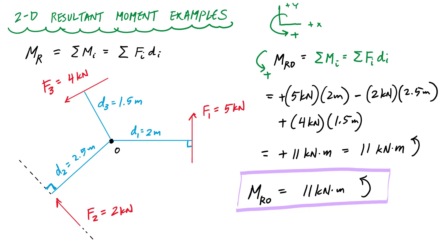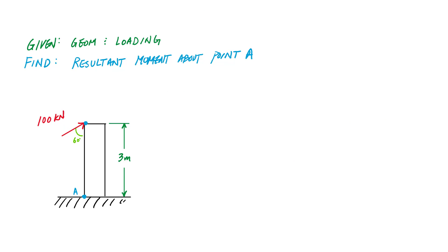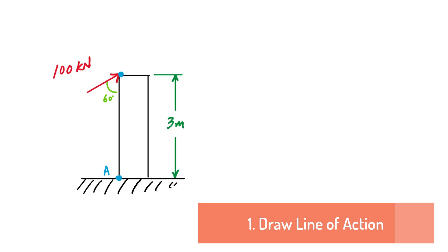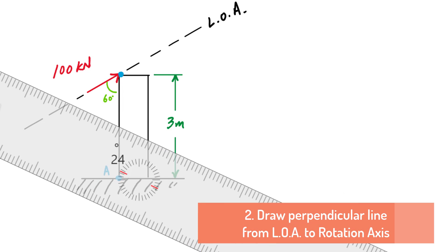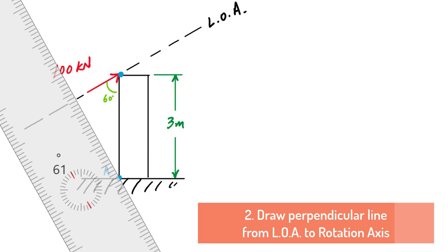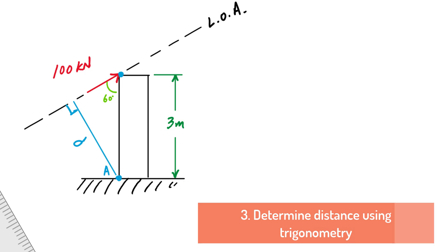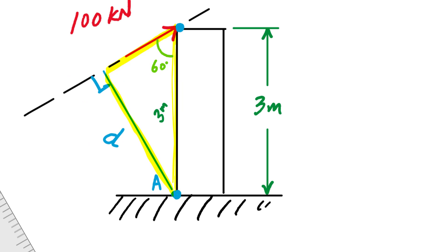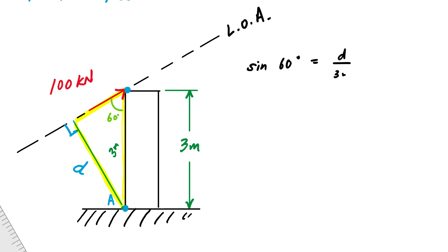Usually in 2D problems, you have a force but are not given the perpendicular distance directly. Here I have a tower with a 100 kN force applied at 60 degrees from the vertical, and I want the resultant moment about point A. One approach: draw the line of action of the force, then draw a perpendicular from that line to point A. Using geometry on the right triangle with a 3-meter height, d = 3 meters × sin(60°) = 2.6 meters.